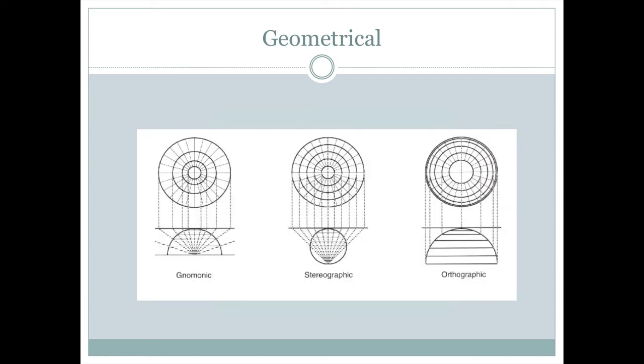Another way to construct map projections is in a geometrical sense. So in this case, on the bottom here, we either see a globe or half of a globe like the northern hemisphere and maybe the lines we're seeing on those globes are the lines of latitude. And then basically we're just extending lines either from the center of the earth or from the other side of the earth onto the piece of paper. Or maybe we're extending lines from the piece of the paper down to the globe as we see on the right hand side there.